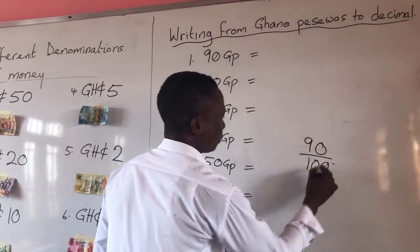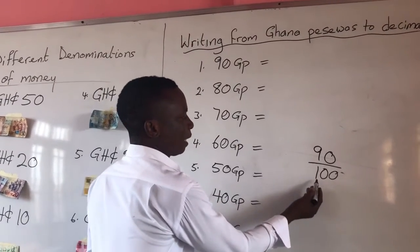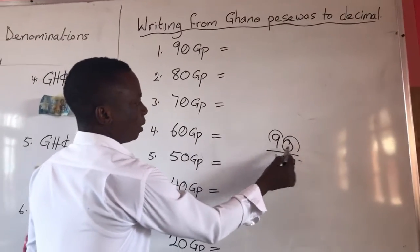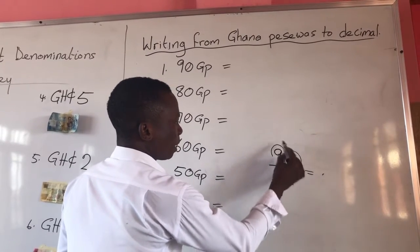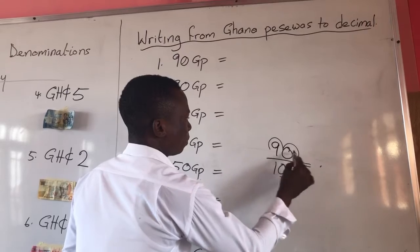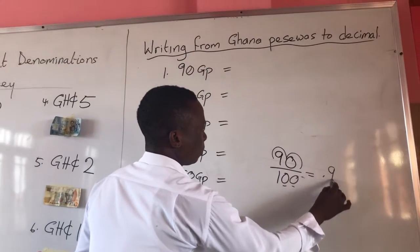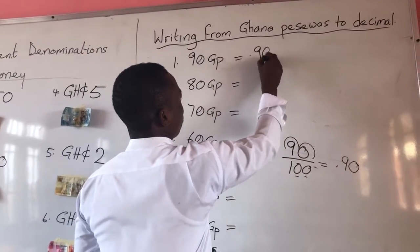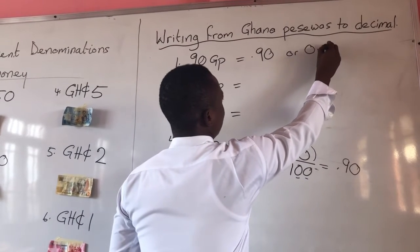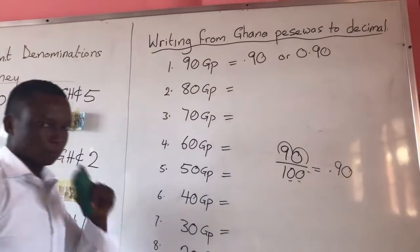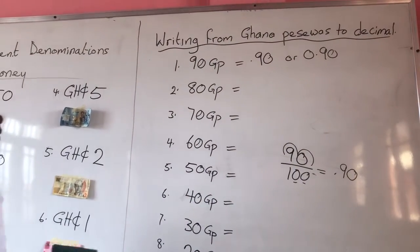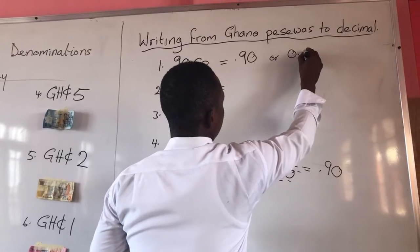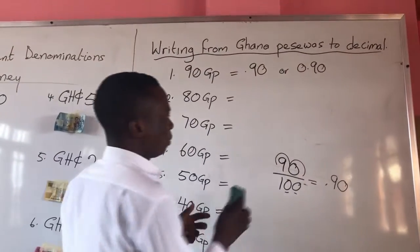Over 100. When you are dividing a figure like this, you stand here and count how many zeros - 1, 2. You move the decimal point 2 places. So you write point 90, which is 0.90. Take note of that.